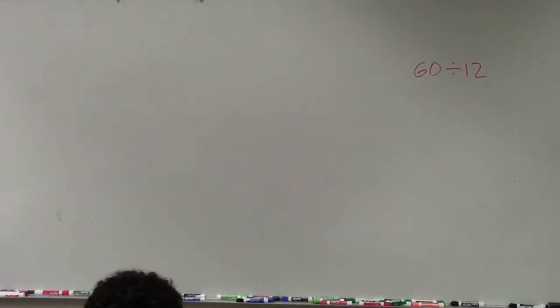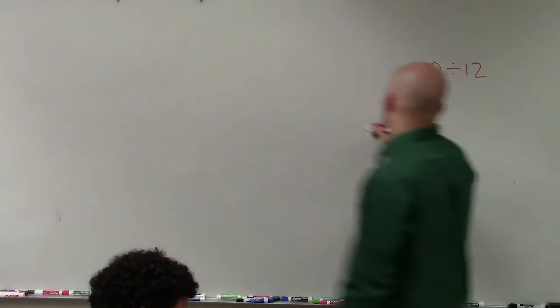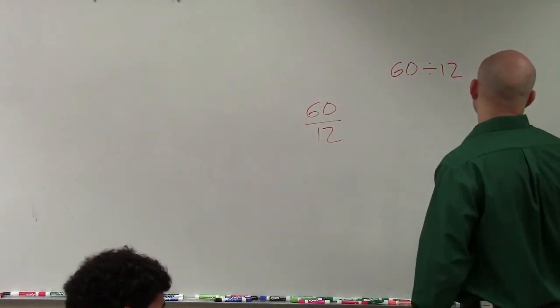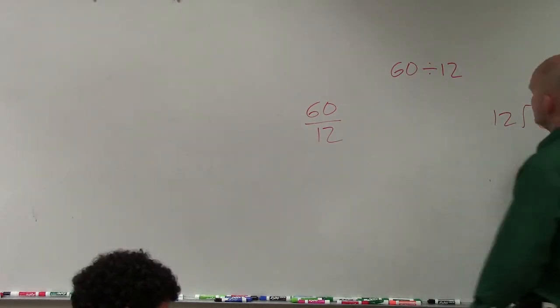Now, when dividing numbers, there's a couple different ways we write division. 60 divided by 12 can be also written as 60 over 12. And you can also write it as 12 divided into 60.